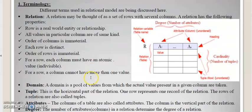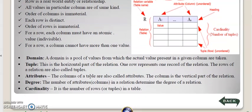This is the cardinality - number of tuples is called cardinality, and number of attributes is called the degree. What is the domain and tuples and attributes?